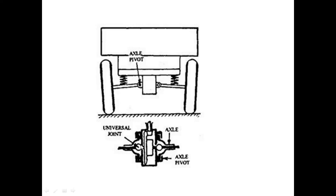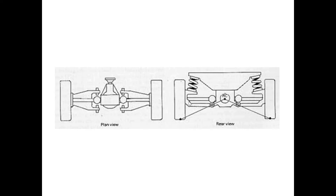So this axle is a pivot with a universal joint. This axle has a shock absorber, and we have to use a frame. The axle is a vertical axle. We have to use a wheel and a swing arm, and we have to arrange the wheel drive with a spring arm.